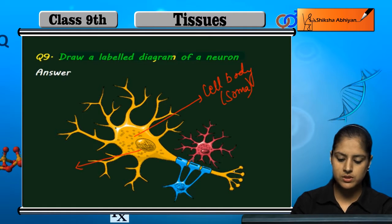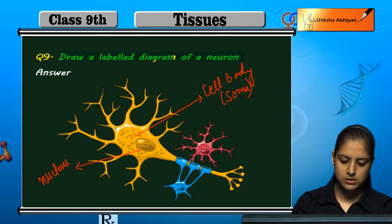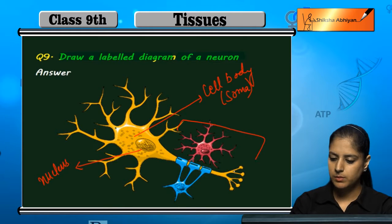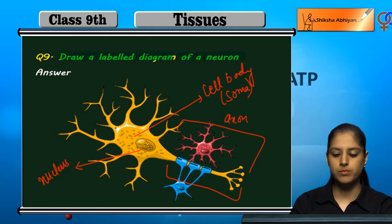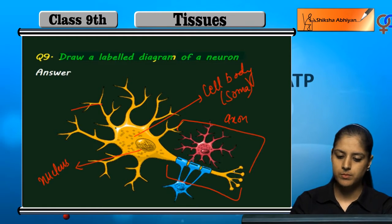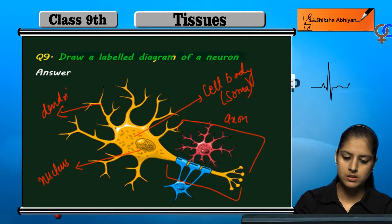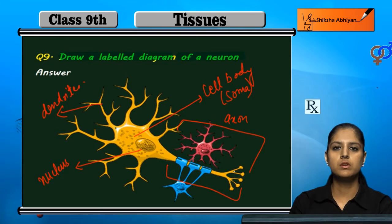This circular portion is the nucleus. This is the axon — the elongated portion. And these elongations that you can see here are the dendrites. So this is the labelled diagram of a neuron.